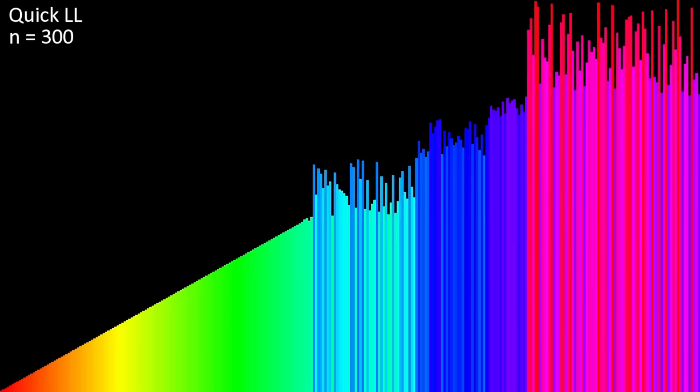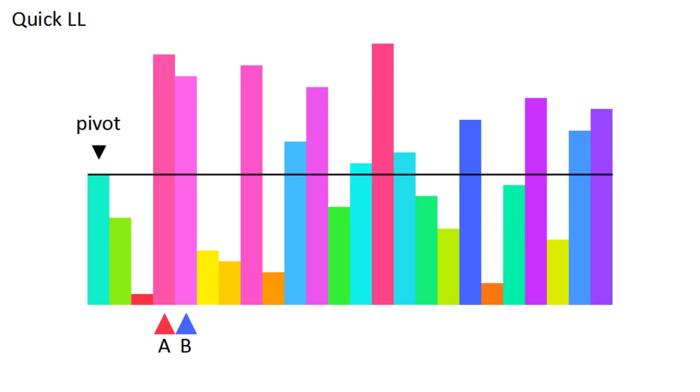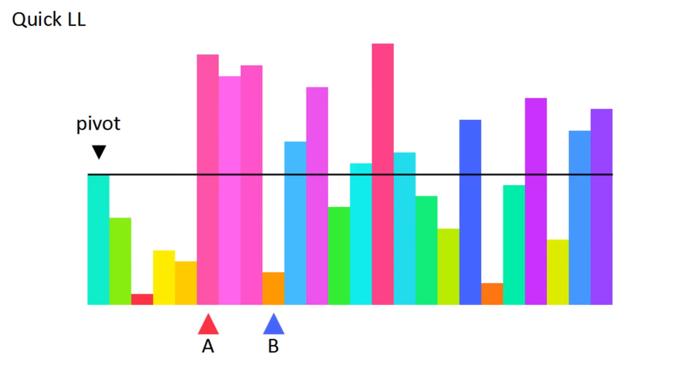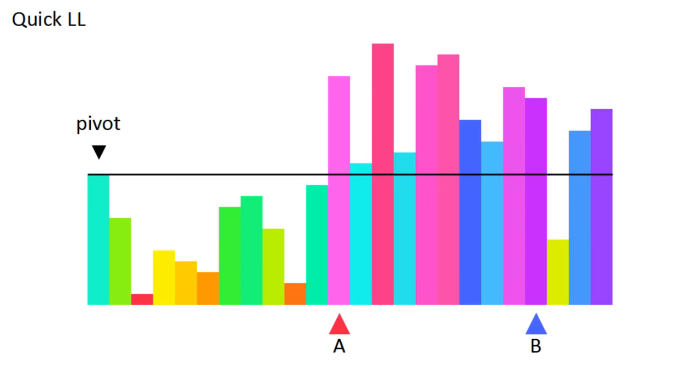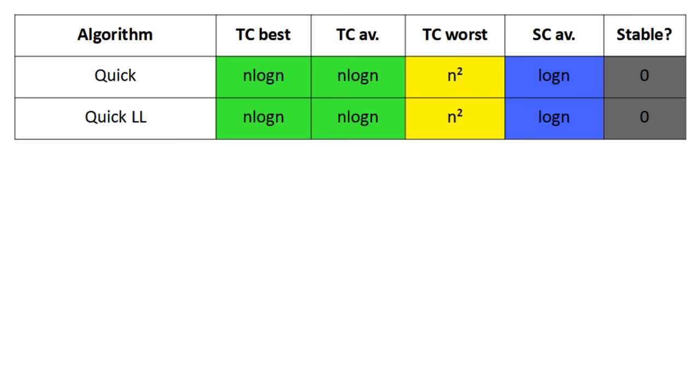Quicksort with LL pointers is just Quicksort with a slightly different partitioning method. Basically, the right sublist moves along as you build it. This time, A and B both start on the left side. If B is bigger than the pivot, then you move B to the right, but if it's smaller, you swap A and B, and move both positions to the right. It has the same time complexity as a regular Quicksort, but it's a bit slower.